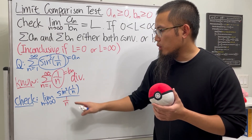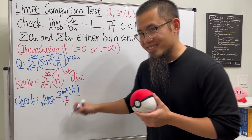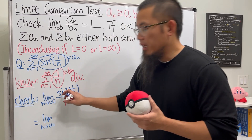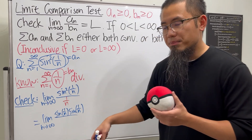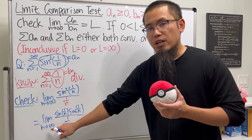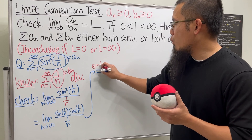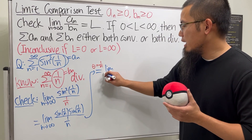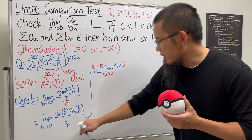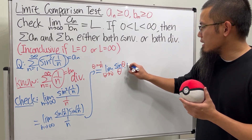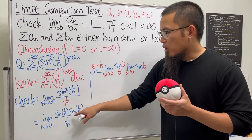As n goes to infinity, 1/n goes to zero, and sin²(1/n) also goes to zero, so we get a zero over zero form. Rather than using L'Hôpital's rule, here's a better approach: write sin²(1/n) as sin(1/n) times sin(1/n), all divided by 1/n. Using the substitution θ = 1/n, as n goes to infinity θ goes to zero, and we get the limit of sin(θ)/θ times the limit of sin(θ) as θ approaches zero.